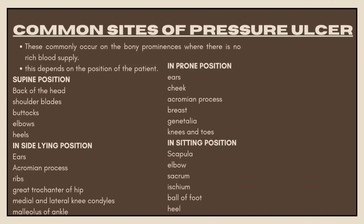Common sites of pressure ulcers — these are commonly known as bony prominences, where there is no rich blood supply. The majority of pressure ulcers occur at bony prominences. This depends upon the position of the patient.